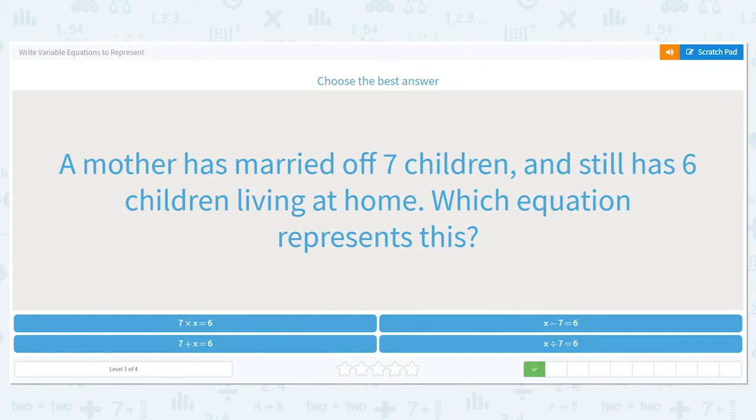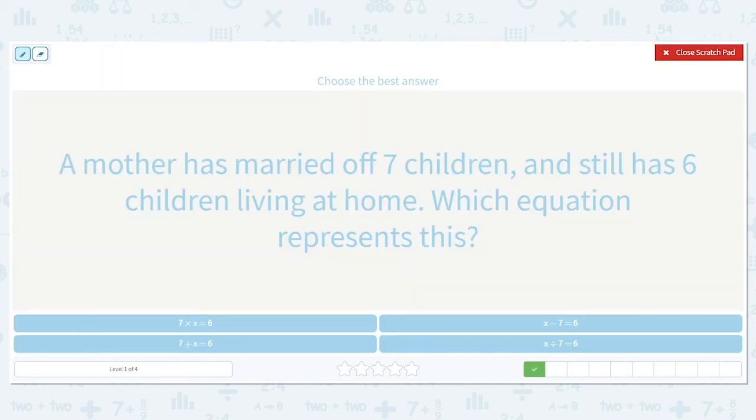A mother has married off seven children and still has six children living at home. Which equation represents this? Okay, so she has married off seven children. So if she has seven of her children married, does that mean they're at home or they're gone? They're gone. So seven children are gone, but she still has six living at home, so there's six left. Do we know based on the problem how many she has in all? No, so we put an x there. So we have x minus seven equals six.